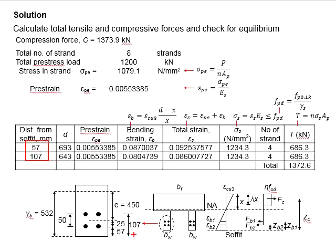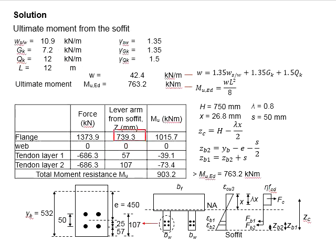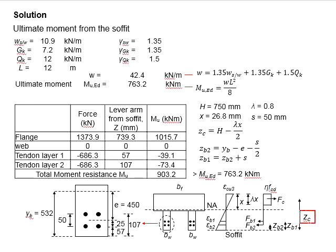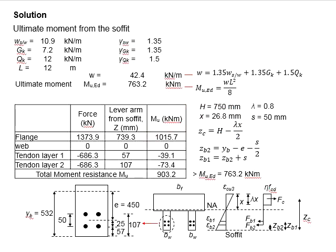The distance from the soffit of the beam has been calculated. To generate the lever arm zc, you use the height of the beam section, which is 750 mm, minus half the height of the stress block, which is λx/2. The value of x was calculated as 26.8 mm earlier, and λ is 0.8. Substituting these values into the equation gives the resulting zc value.